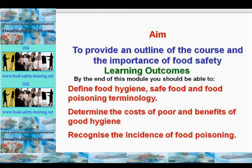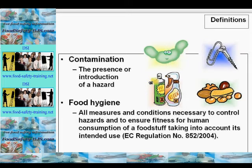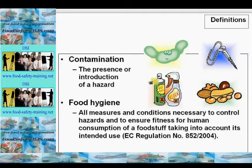You should also recognize the incidence of food poisoning. Some definitions: contamination is the presence or introduction of a hazard, covered under EC Regulation 852/2004, a regulation you'll hear quite often during this course. Food hygiene refers to all the measures and conditions necessary to control hazards and to ensure fitness for human consumption of a foodstuff, taking into account its intended use — again covered by EC Regulation 852/2004.